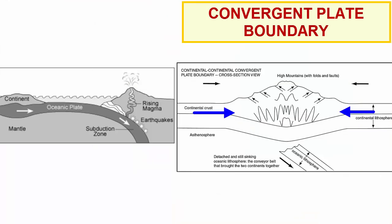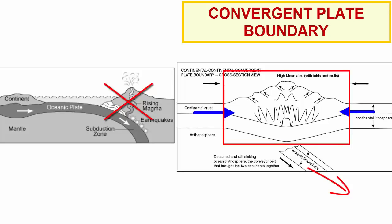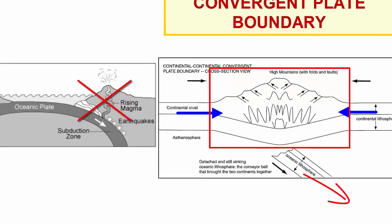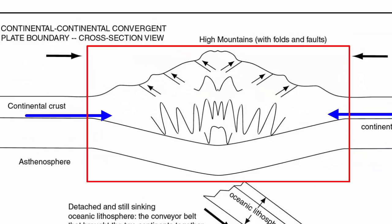When two continental plates collide, subduction brings them together, but after they collide, the subducting plate completely detaches and sinks into the mantle. Volcanism stops, the trench disappears, and the largest mountains found on the planet form as terrain accretion mashes the two continents up into a folded, faulted mountain system that rises high above the surface and has a deep isostatic root beneath.